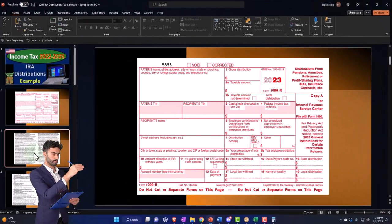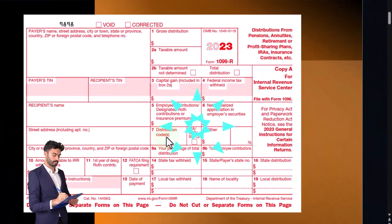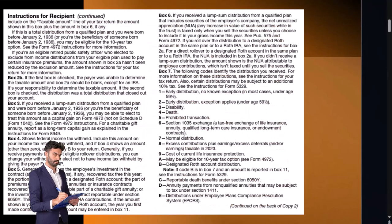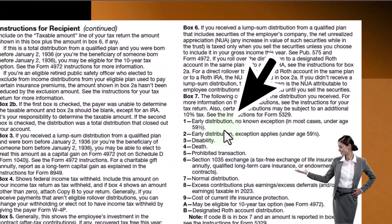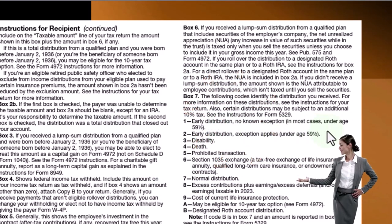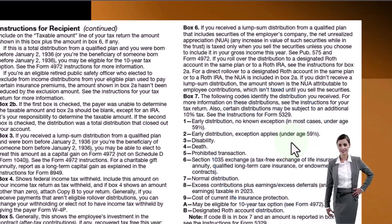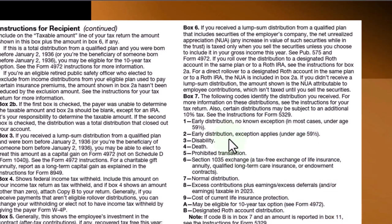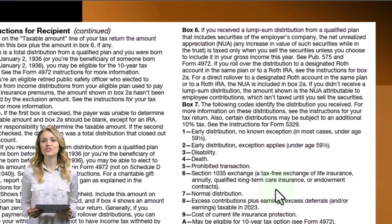The distribution code on line 7 for a normal distribution is code 7. If you see something unusual on that line, you can look at the second page of the form or look it up on the IRS website, which gives you a list of distribution codes. Code 1 is early distribution — that's the one you don't want to see in most cases — for taxpayers under age 59½. Code 2 is early distribution where an exception applies, such as disability or death.